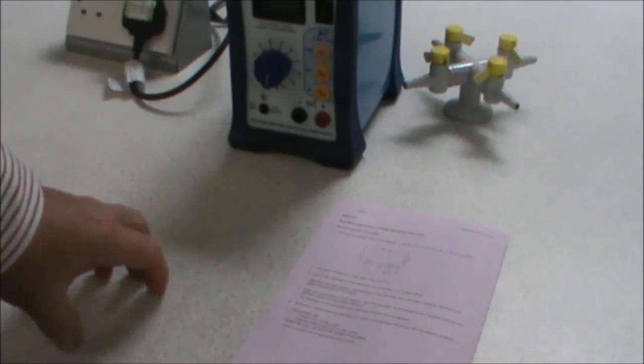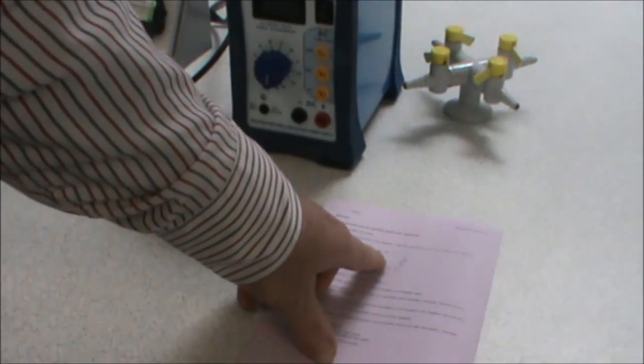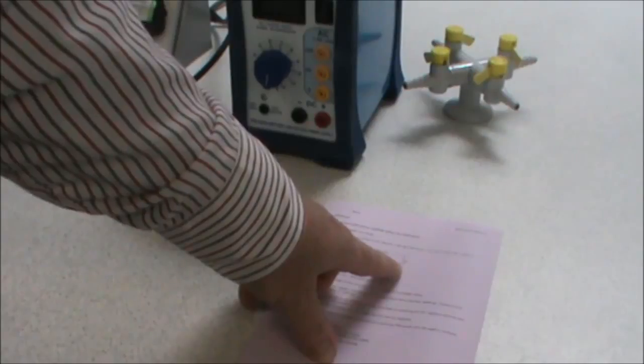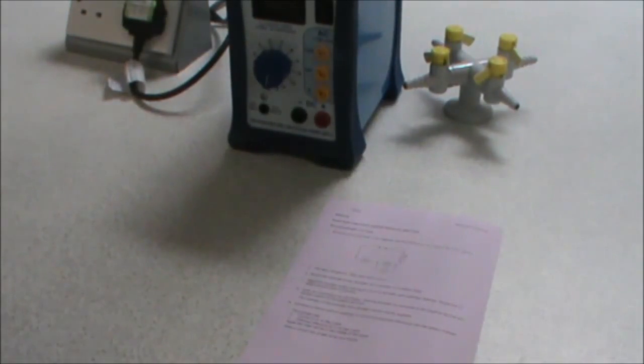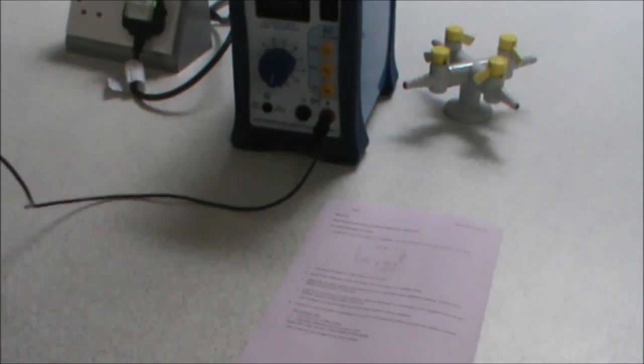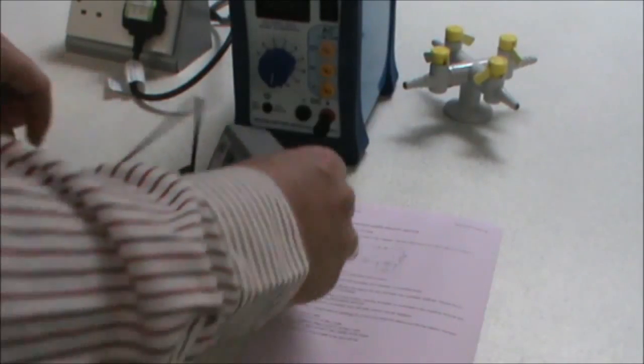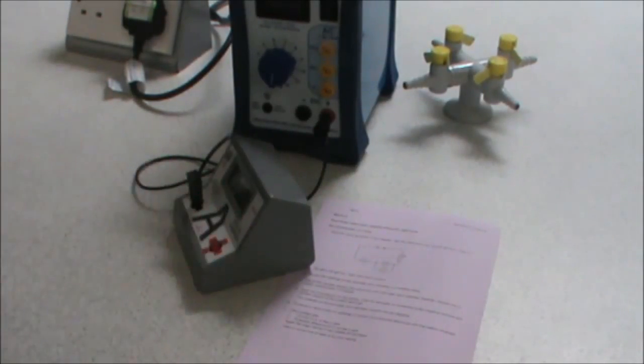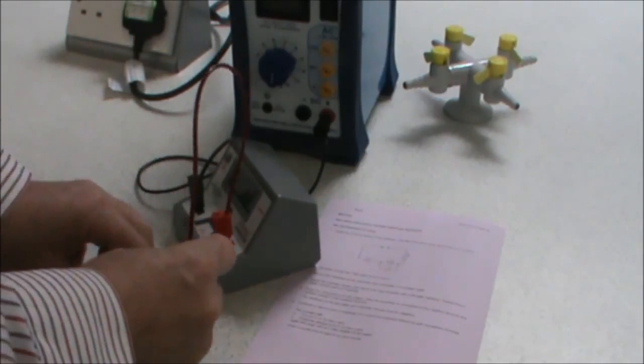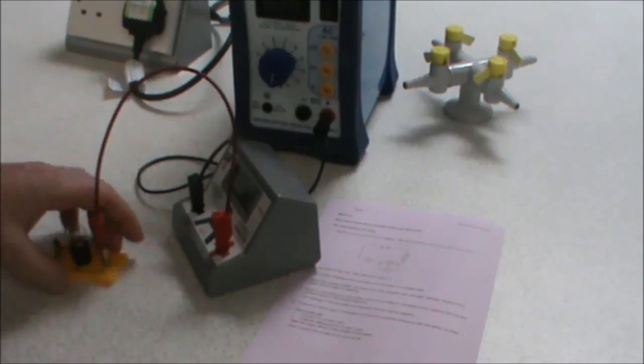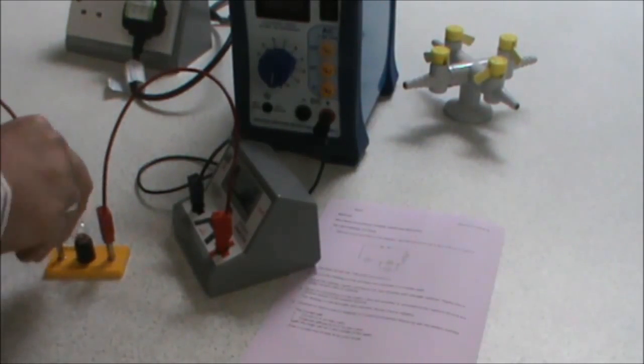So following my circuit round, remember I've got my power supply in place of the cells and the rheostat. We connect from the power supply to the ammeter, from the ammeter to the lamp, and from the lamp back to the power supply.